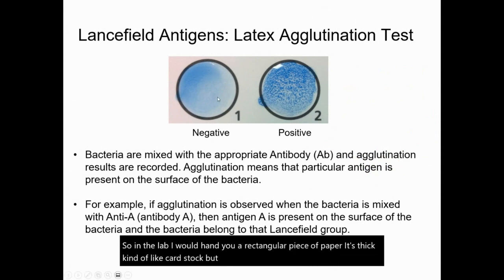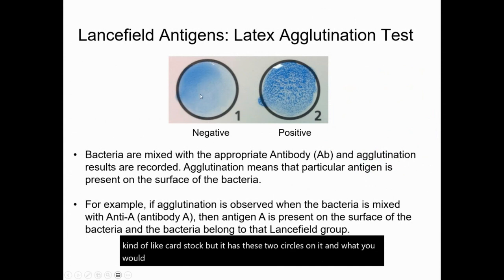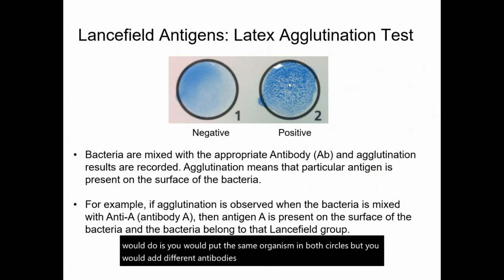It has these two circles on it. What you would do is put the same organism in both circles, but add different antibodies to each circle.